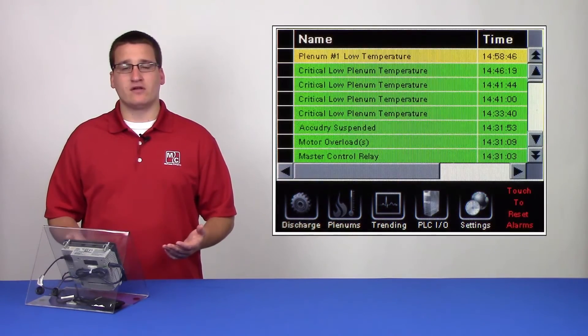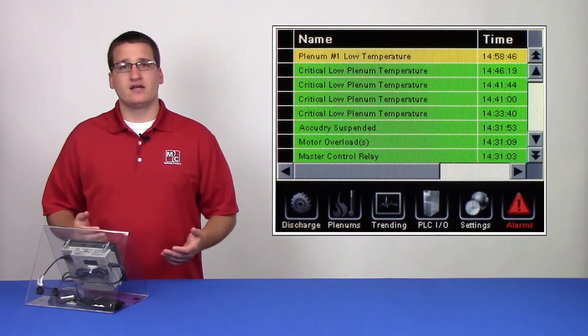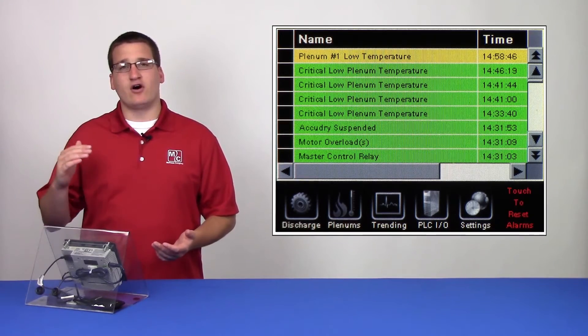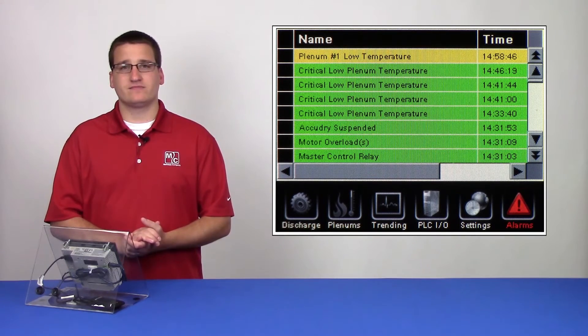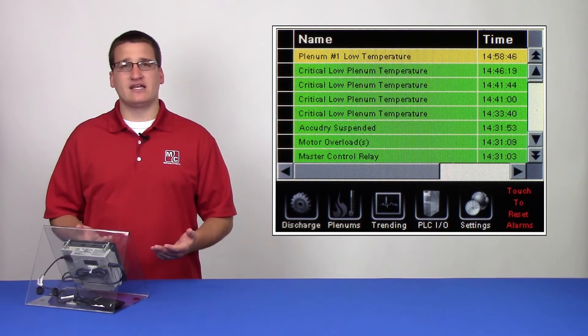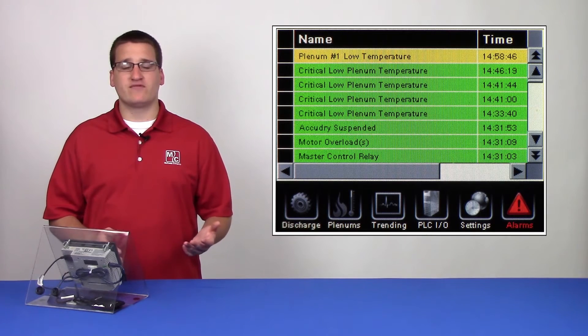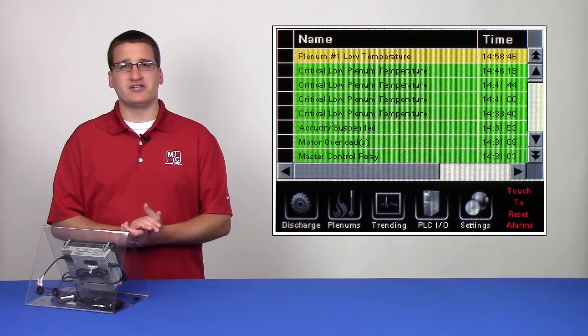Lastly, we have our alarms chapter. This chapter provides a list of all past alarms, as well as the timestamp that they happened. A green line indicates an alarm that has already been fixed and has been acknowledged by the HMI.